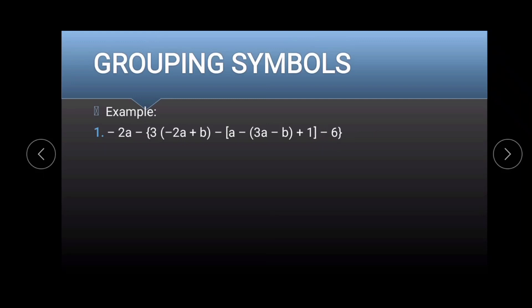Remember, in eliminating grouping symbols, we always go first with parentheses, then brackets, then braces. To do that, we eliminate the parentheses first. We distribute 3 to negative 2a plus b. So let's copy negative 2a, and then 3 multiplied to negative 2a gives us negative 6a.